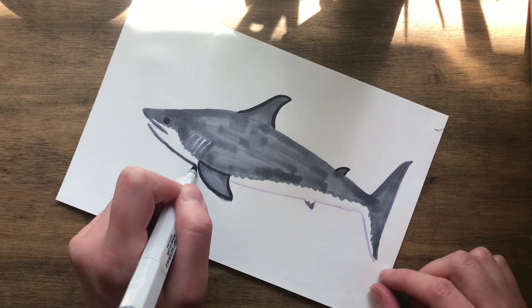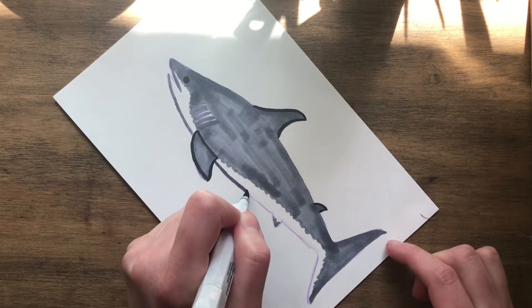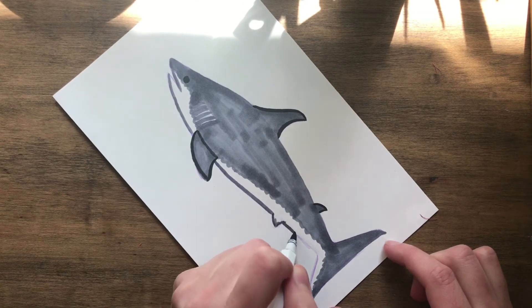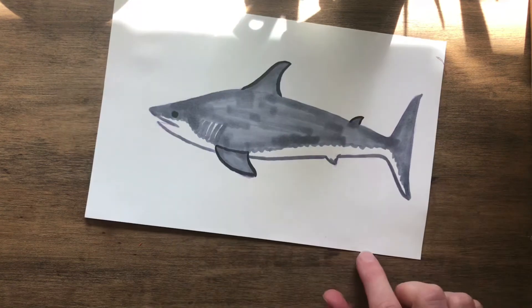And now I'm going to kind of start. I'm going to line the body of the fish on the bottom. Well the shark not fish. With the gray.